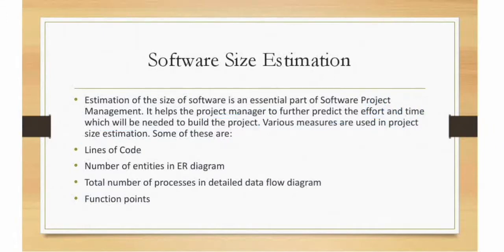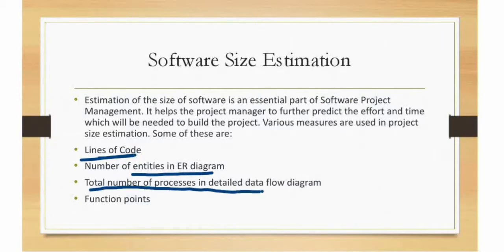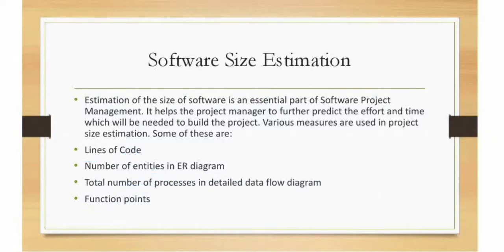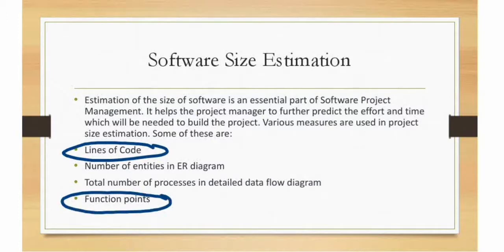The first one is the basic and simple LOC — Line of Code. The second is number of entities in ER diagram. The third one is total number of processes in a data flow diagram. The last one is function point. The most important ones we focus on are LOC and function points.